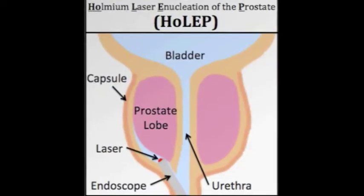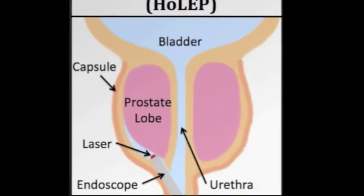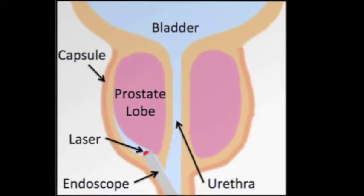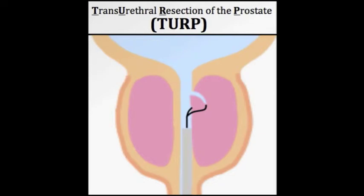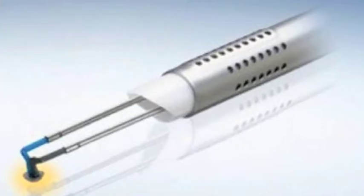In one approach, called HOLEP, the surgeon holds an endoscope with a laser fiber running through it and laser resects entire prostate lobes. Another approach, called TURP, the surgeon removes small pieces of the prostate, bit by bit, with a wire loop.